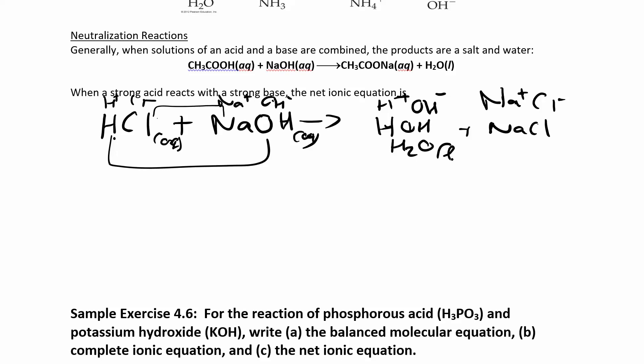Water, H2O, is a liquid. Sodium chloride is still aqueous. So now to get to the net ionic equation, let's write the ionic equation. This is the molecular equation where we have HCl and sodium chloride all together. Now let's split up the soluble ionic compounds and the strong acids and strong bases into ions.